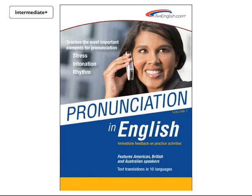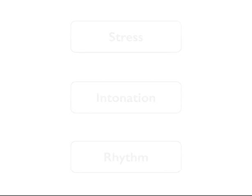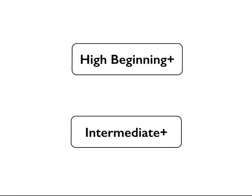Pronunciation in English is an online, interactive program. It helps you use the important elements of stress, intonation, and rhythm like a native speaker. Pronunciation in English is now divided into two levels: High Beginning Plus and Intermediate Plus.